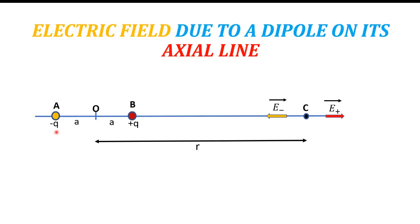The field due to minus q will be in the direction of C to A, because the field for minus q is always towards minus q. A dipole moment is created due to this dipole, always from minus q to plus q — it is in the direction of p-vector.